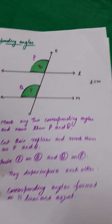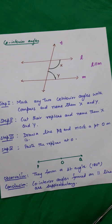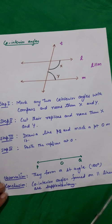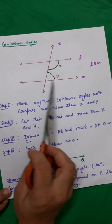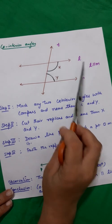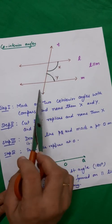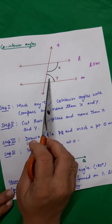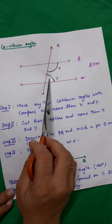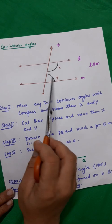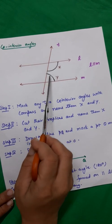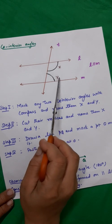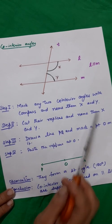Next part of the activity is to prove that co-interior angles are supplementary, meaning their sum is 180 degrees. First step: mark these angles with L parallel to M and T as the transversal. These two angles are known as co-interior angles, or interior angles on the same side of the transversal. I have marked them with the compass and named them X and Y.